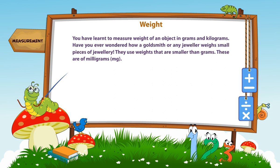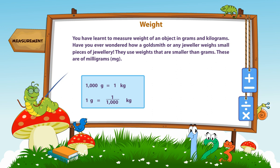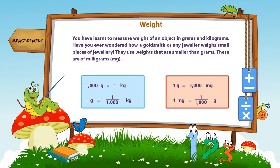Weight: You have learned to measure the weight of an object in grams and kilograms. Have you ever wondered how a goldsmith or any jeweler weighs small pieces of jewelry? They use weights that are smaller than grams — these are milligrams. 1,000 grams is equal to 1 kilogram. 1 gram is equal to 1/1,000 kilogram. 1 gram is equal to 1,000 milligrams. 1 milligram is equal to 1/1,000 gram.